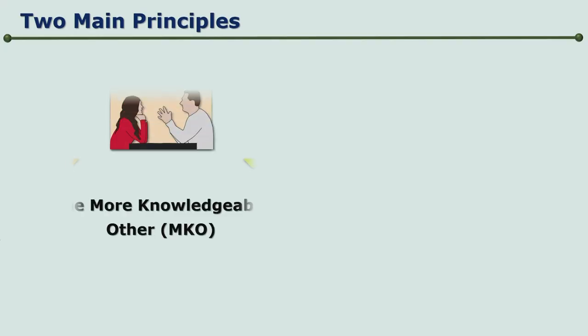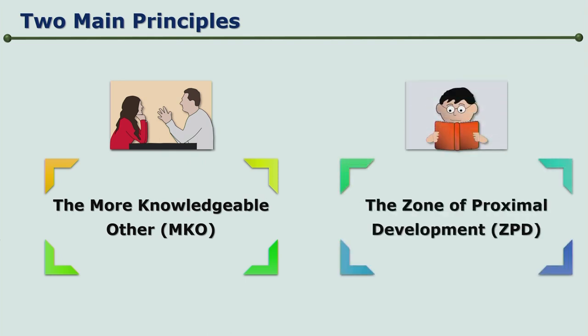Two main principles involved in social constructivism are the More Knowledgeable Other, in short MKO, and the Zone of Proximal Development, in short ZPD. Let us understand what these mean.